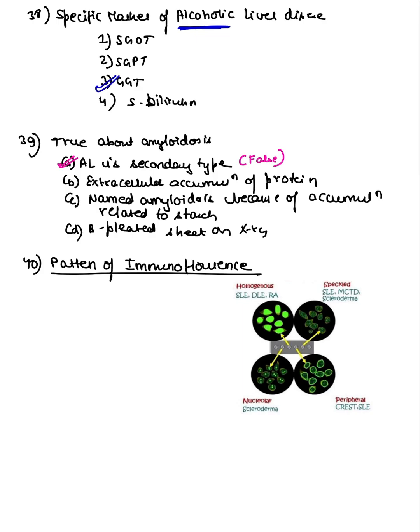Specific marker of alcoholic liver disease: GGT — gamma-glutamyl transferase. Then amyloidosis was asked — it is stained with Congo red; under UV light, thioflavin T stain is used. Amyloidosis AL is the primary type.